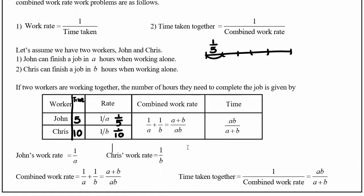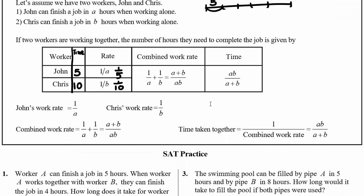Now if they work together, we need to combine these two rates — that is called combined work rate. So one-fifth plus one-tenth equals three-tenths. That means three-tenths of a job can be done in one day.